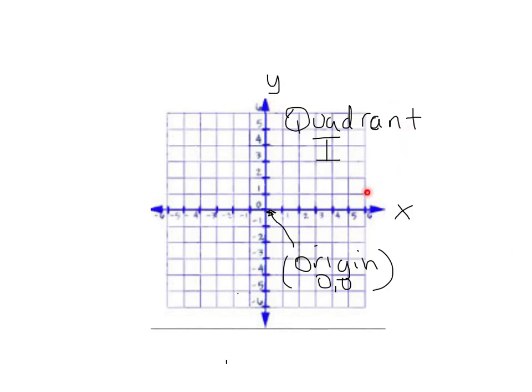The first quadrant, quadrant one, we, for some reason, I'm not sure what, almost always use the Roman numerals for the one in quadrant one. Quadrant one is where both your x-values and your y-values are positive.